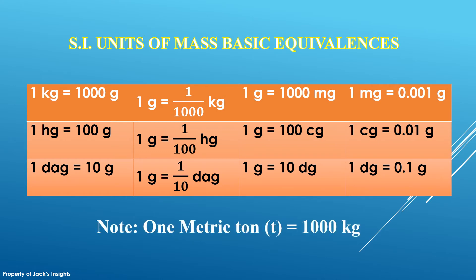And take note of this relationship, which is also important. 1 metric ton, its symbol is small t, is equal to 1000 kilograms.